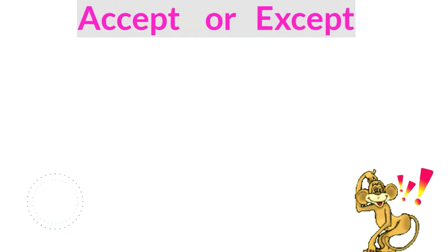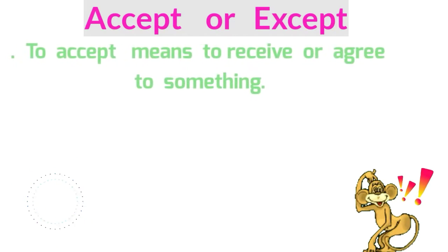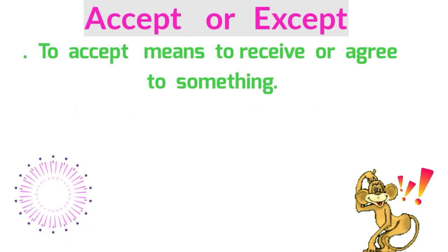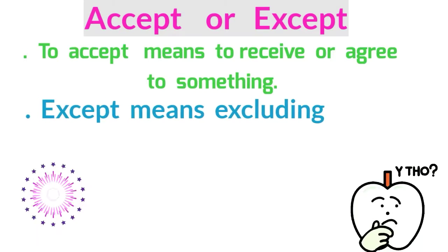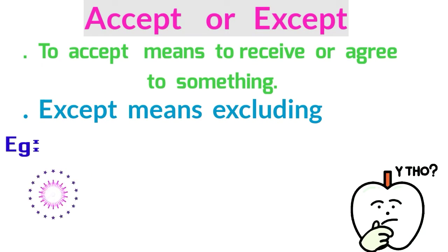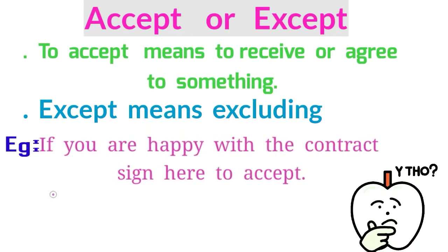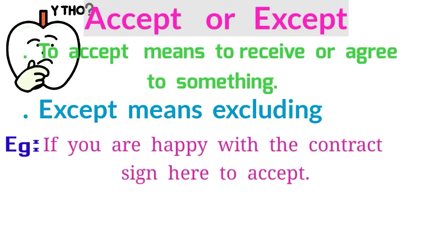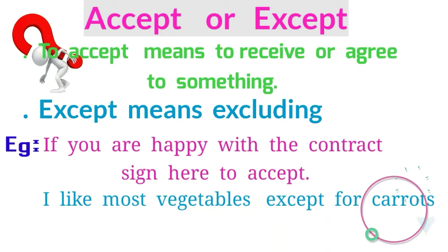Accept or Except. To accept means to receive or agree to something. Except means excluding. Example: If you are happy with the contract, sign here to accept. I like most vegetables except for carrots.